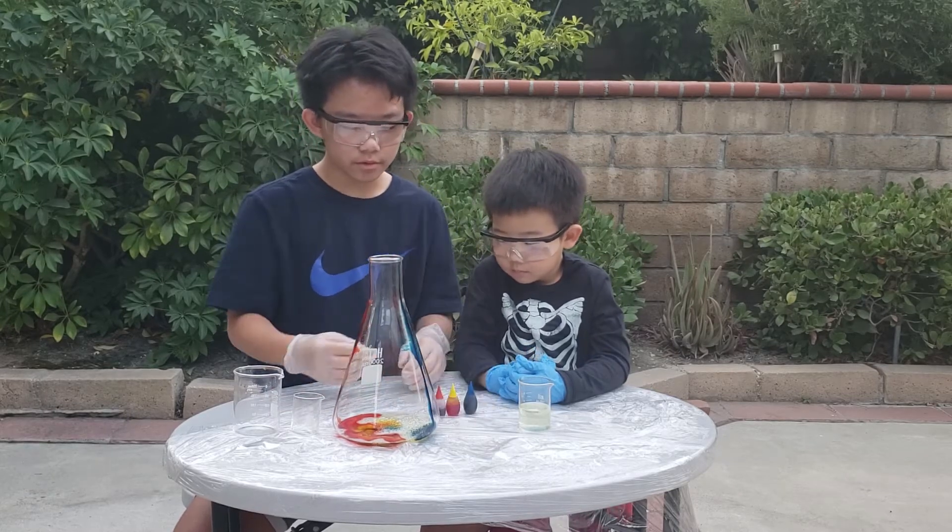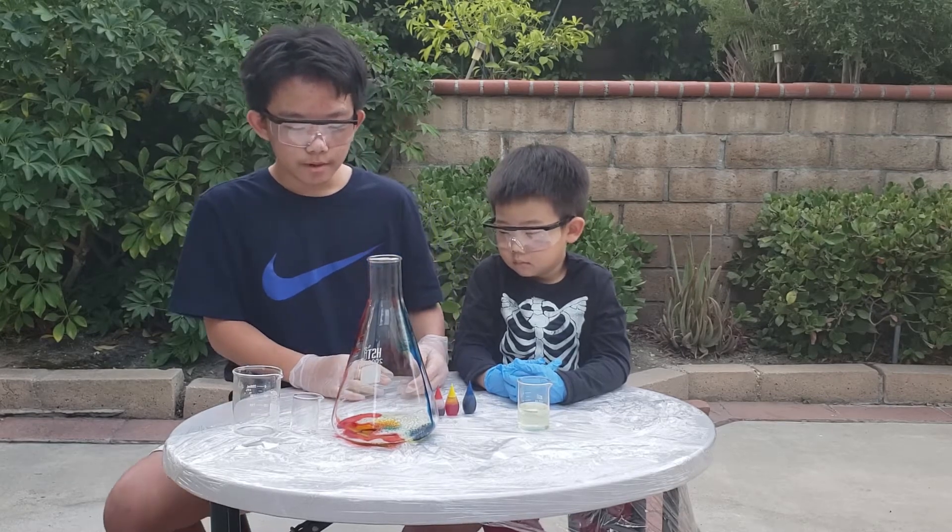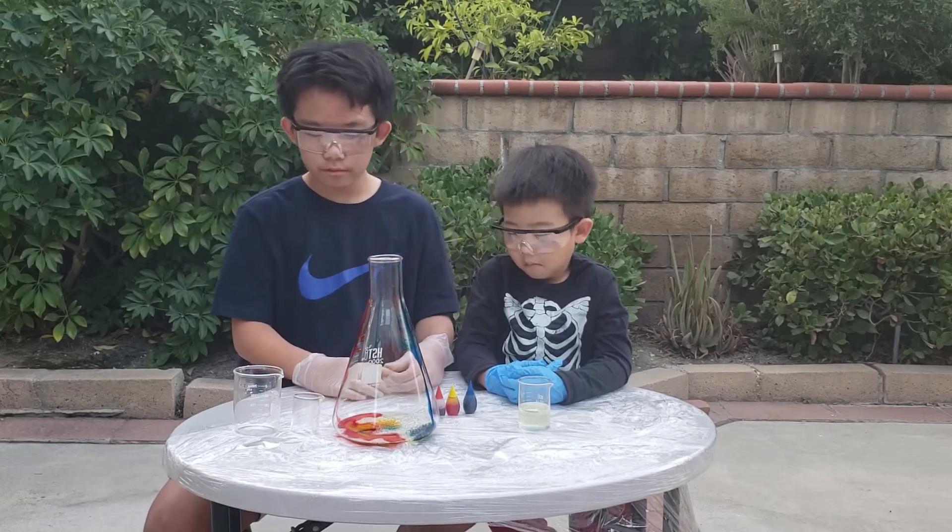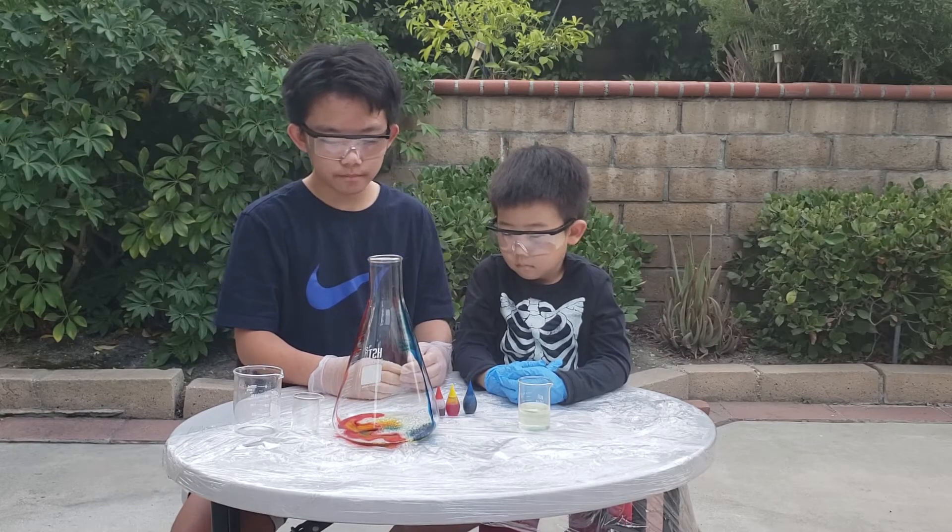Remember, a rainbow goes red, orange, yellow, green, blue, and then purple. But because yellow is in the middle, we got to make the yellow go in the middle. Got it? Got it.